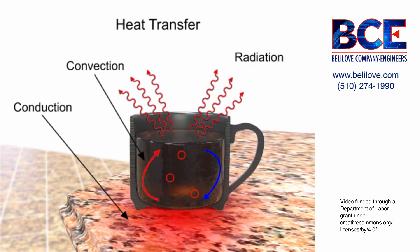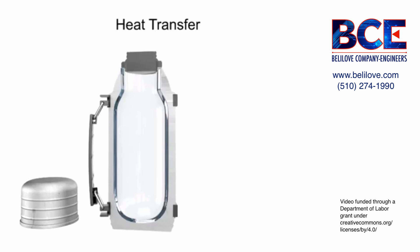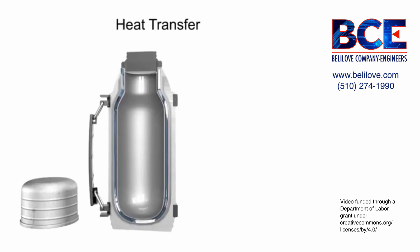One way to conserve the heat of a liquid and prevent heat transfer is to place it in a thermos. The use of a vacuum chamber with silvered surfaces along with low conductive materials can greatly improve the amount of heat or cold that is lost to the surrounding environment.